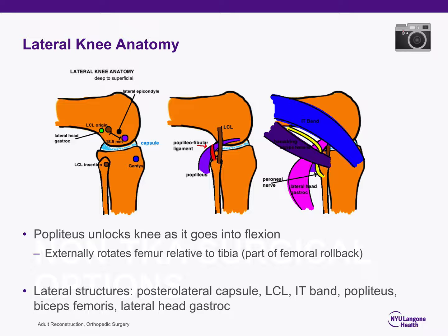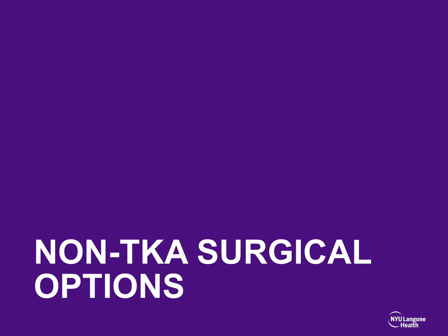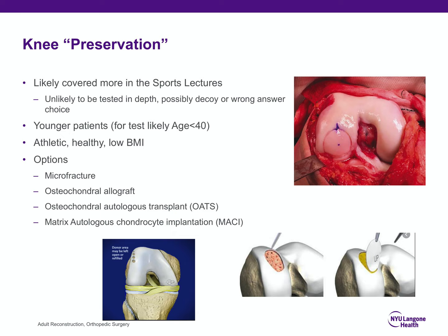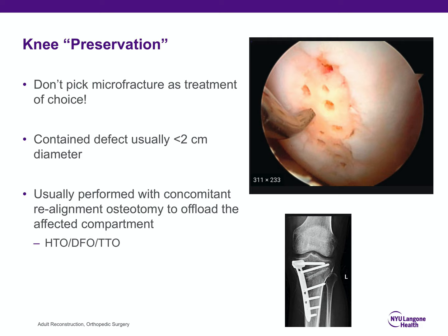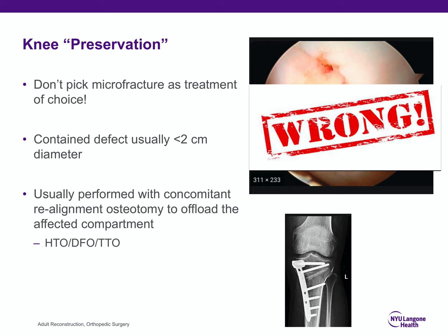Non-TKA surgical options: knee preservation will be covered more in sports lectures but is increasingly popular, though early literature makes it unlikely to be tested in depth. It's most appropriate for patients under 40 who are athletic with low BMI. Options include microfracture, osteochondral allograft, osteochondral autologous transplant (OAT), and MACI (matrix autologous chondrocyte implantation). For the test and in practice, do not pick microfracture — it is the wrong choice. Usually it's a contained defect less than 2 cm, performed concomitantly with a realignment osteotomy.